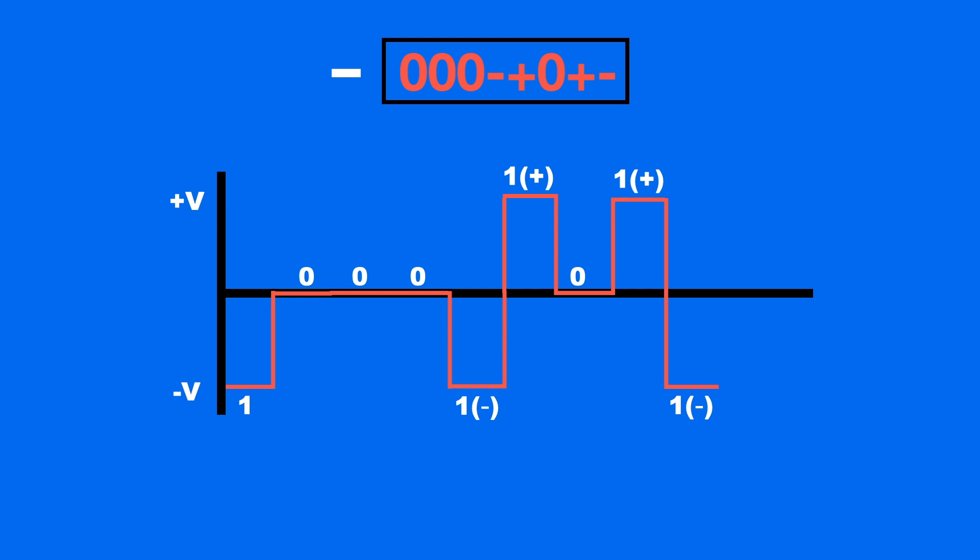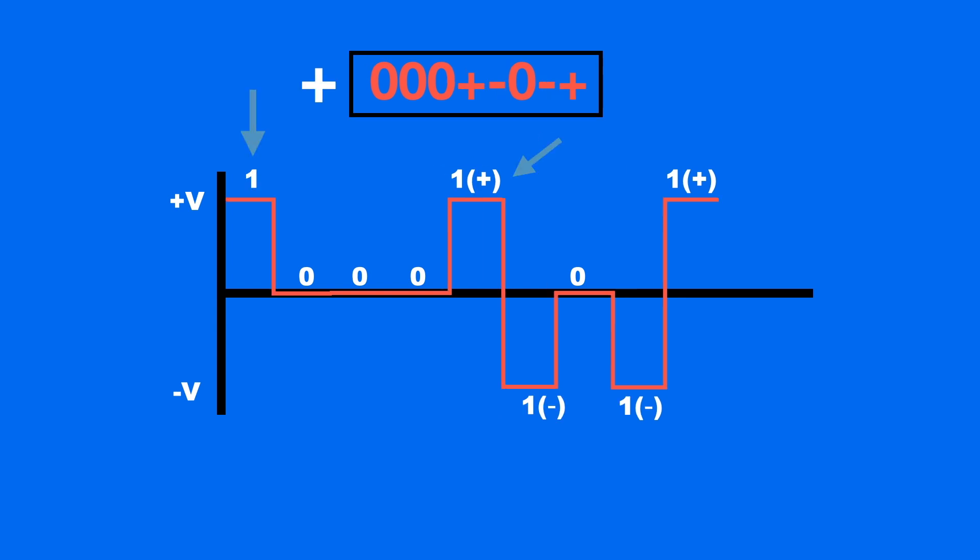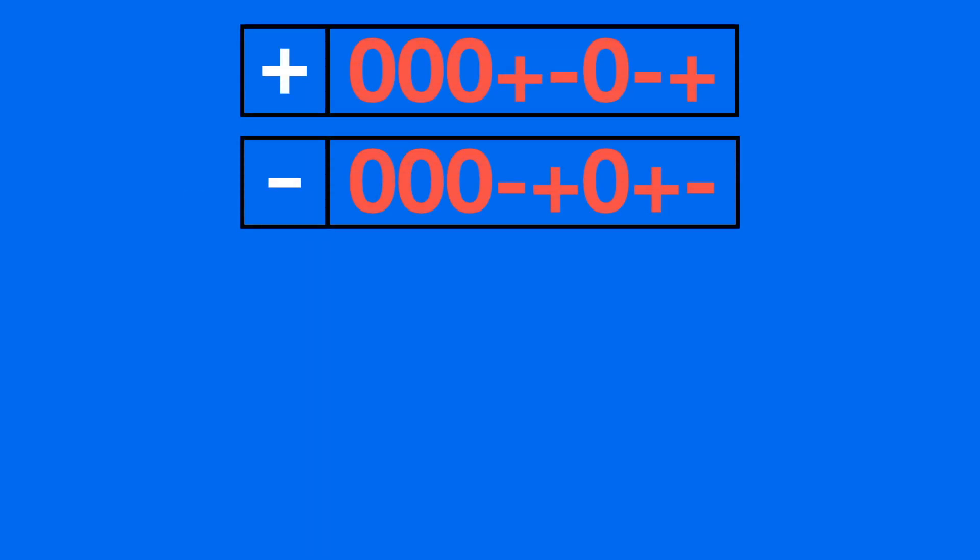As we can see, these substitution patterns violate the rules of regular bipolar AMI, due to the one bit being the same polarity as the one before the pattern. This violation pattern is interpreted as a substitute for eight zeros. And that's basically how B8ZS works.